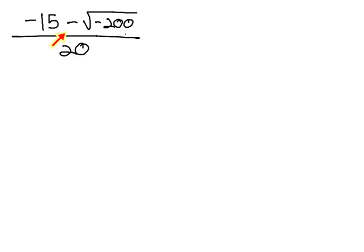So instead, I want to move our focus to the negative 200 under the radical, and see if there's any simplifying we can do with the negative 200.